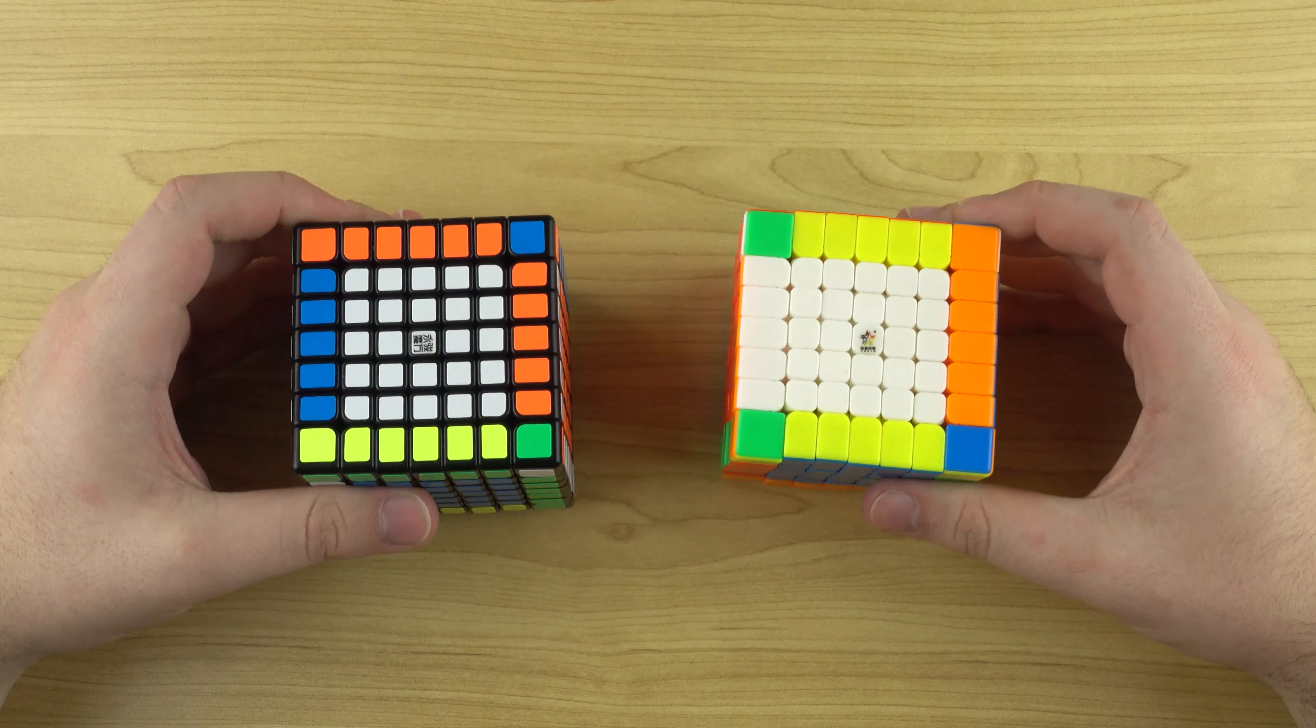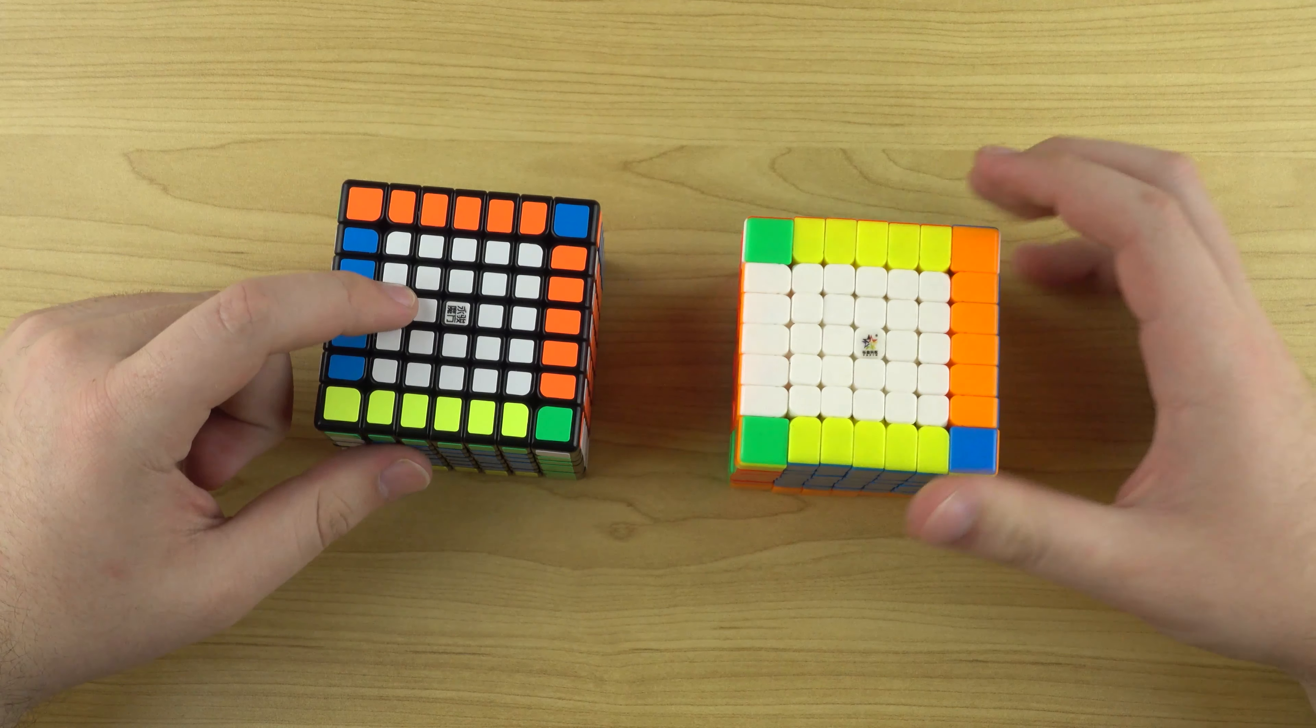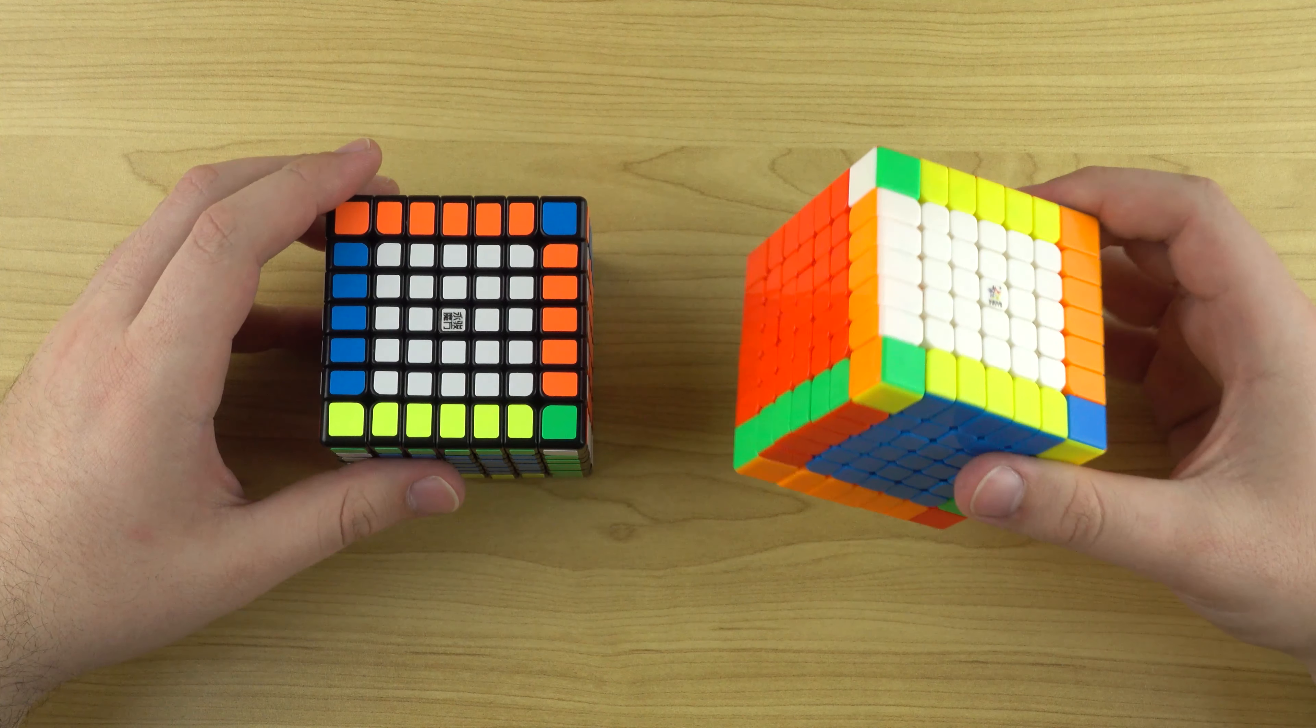I'd recommend buying either of them, to be honest, if you want to try out 7x7. I'd prefer this one, but the Yuxin one still is a good option. I think definitely worth checking out.